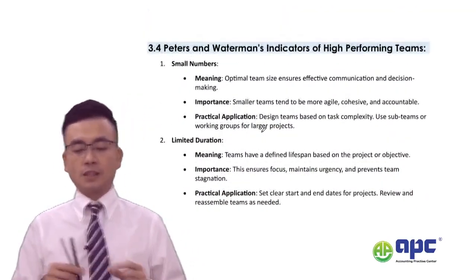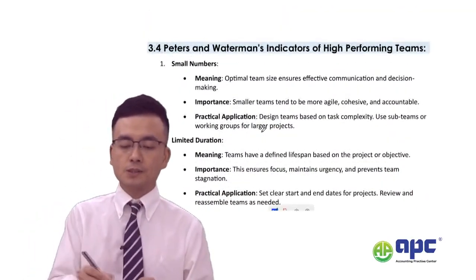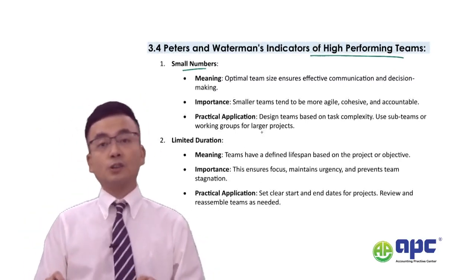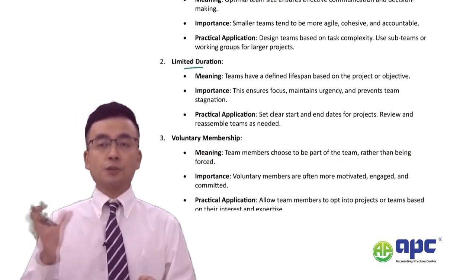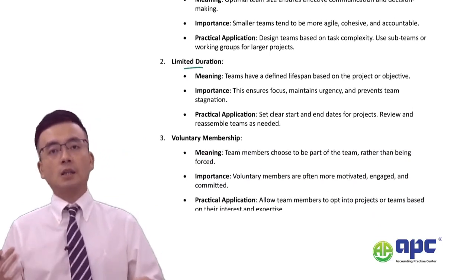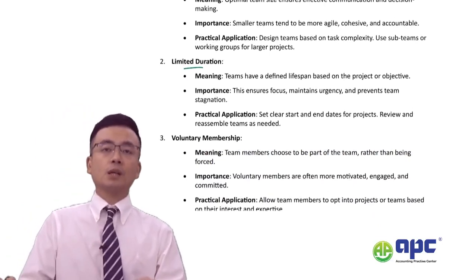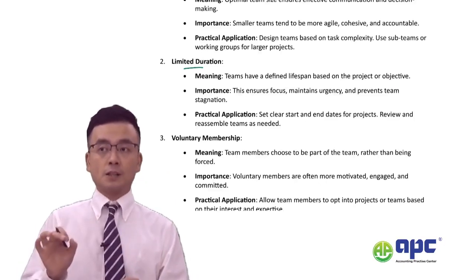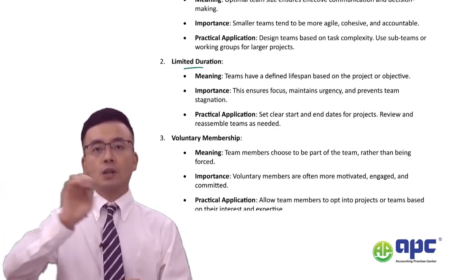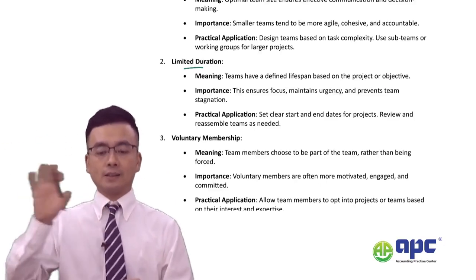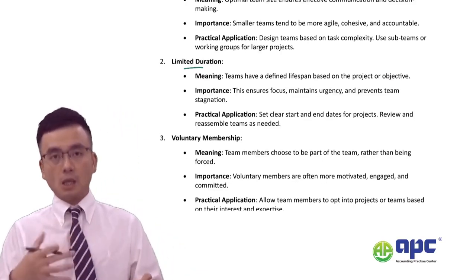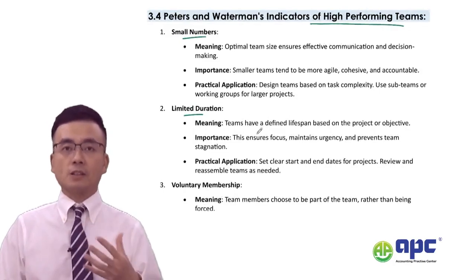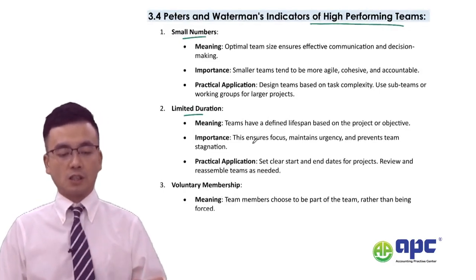Another indicator of high-performing teams is whether the team numbers are relatively small and the duration is limited with a fixed purpose — for example, a team of exam markers with a specified standard, start and end date. This implies the team will be high-performing and effective, meeting its targets.